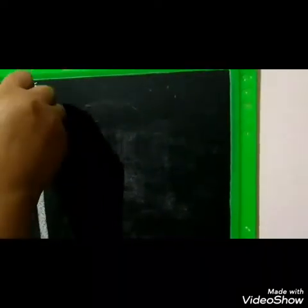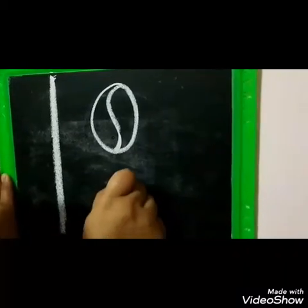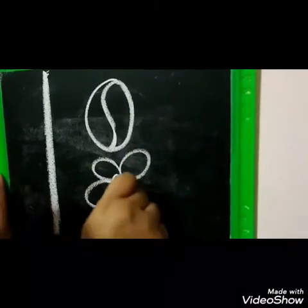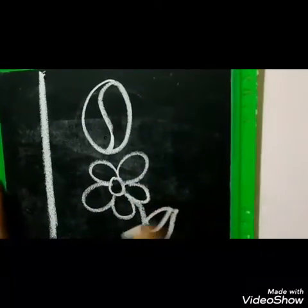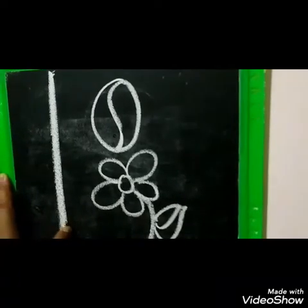Now children, let us revise how to write number 1 and number 4. I am sure that you know how to write it. So come on, let us see it. We write number 1 from up then we go down — a standing line. Number 1. We write number 1 with the help of a standing line. 1 number 1 ball. 1 number 1 flower.